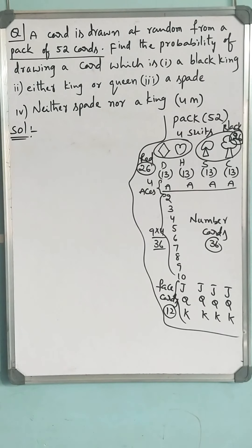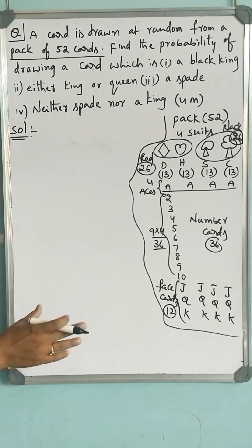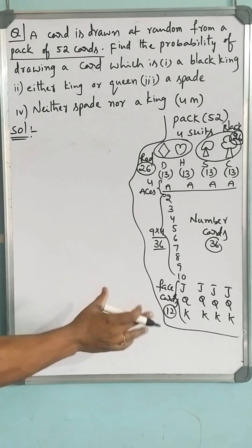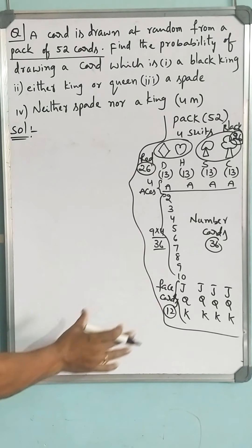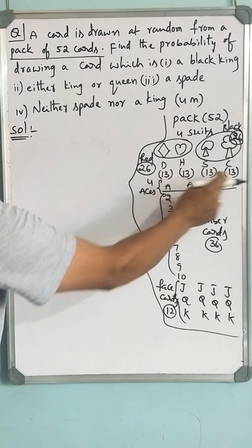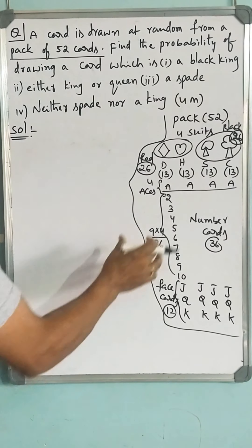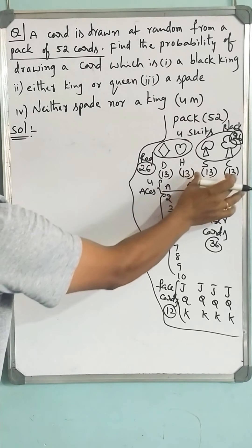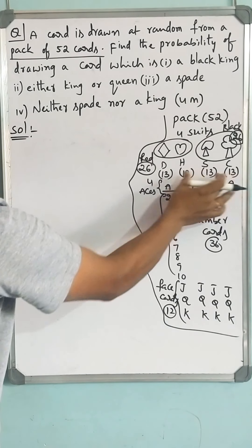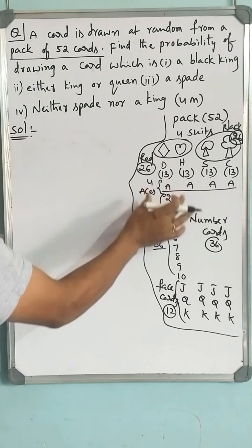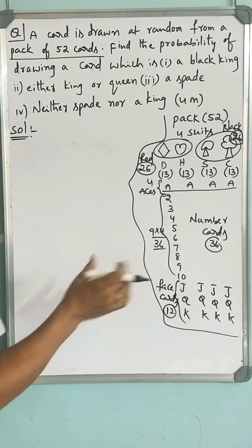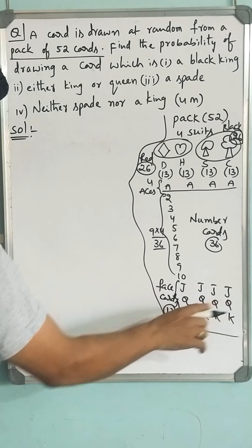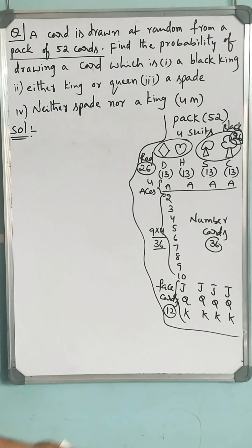You should understand comprehensively what a pack of cards contains. Among the 4 suits: 26 black cards, 26 red cards, 4 aces, 36 number cards, and 12 face cards — among them 4 jacks, 4 queens, and 4 kings.